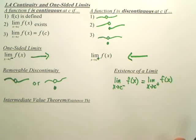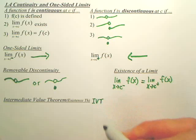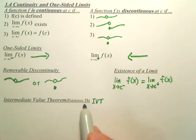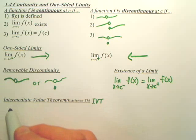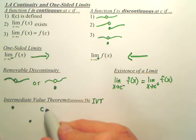And lastly, the intermediate value theorem, IVT. It's an existence theorem. It's basically saying if I have a point here and a point here, and I'm making a continuous line.